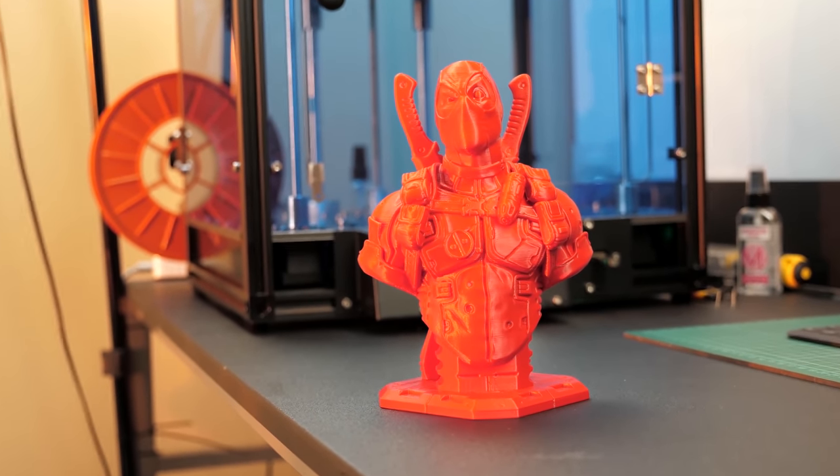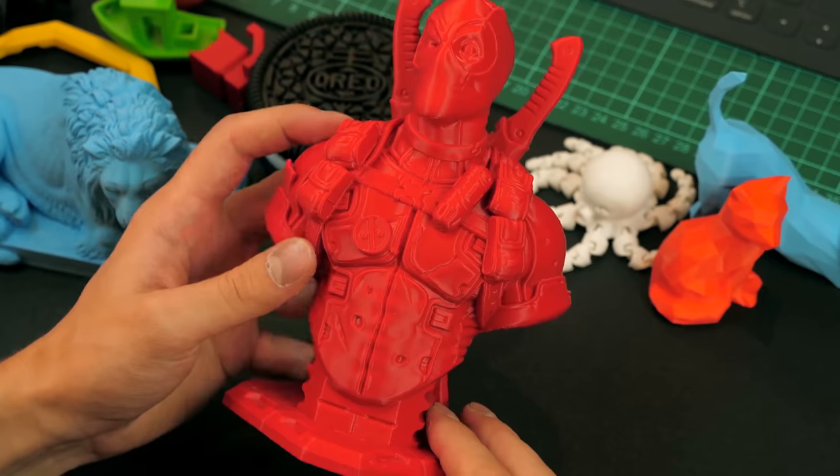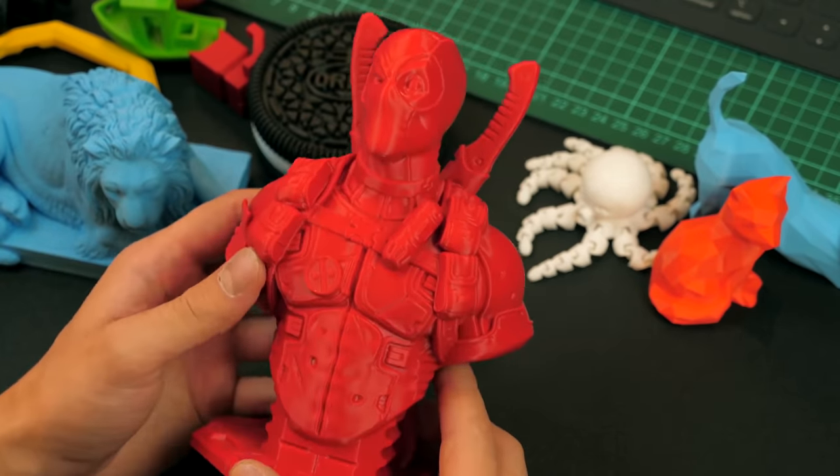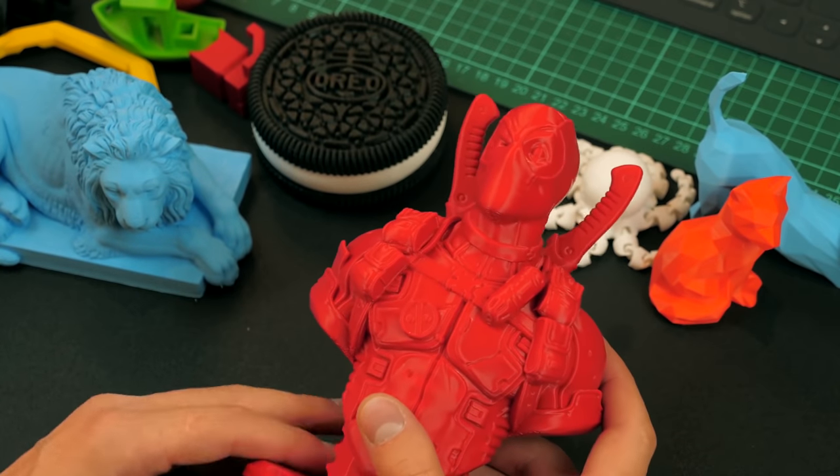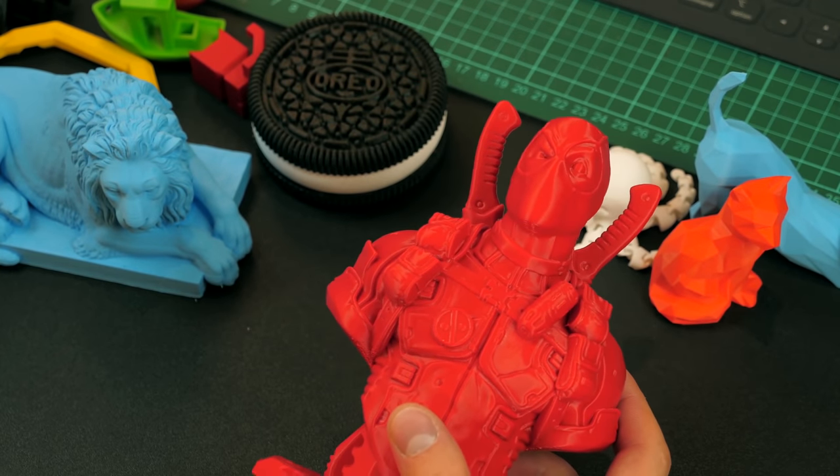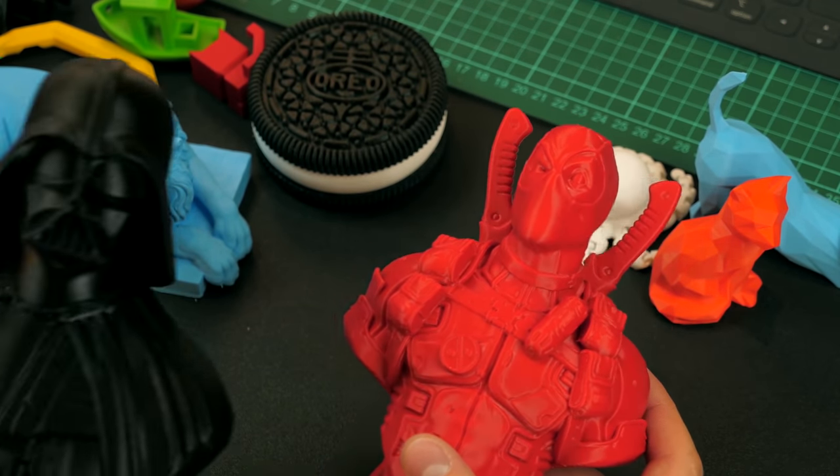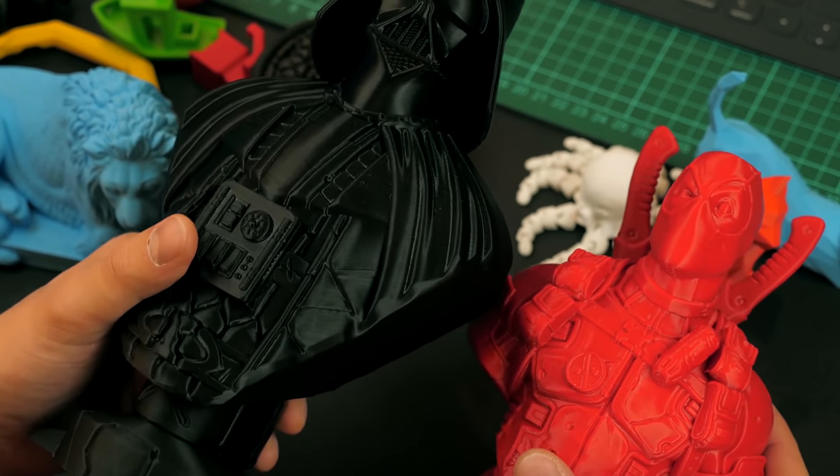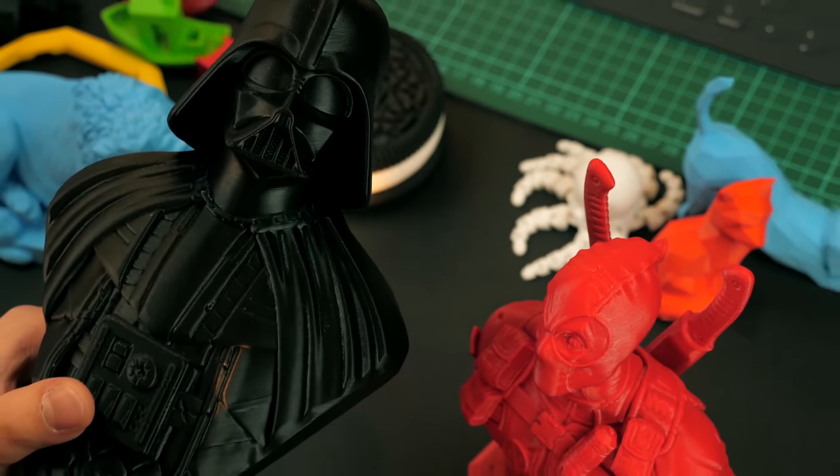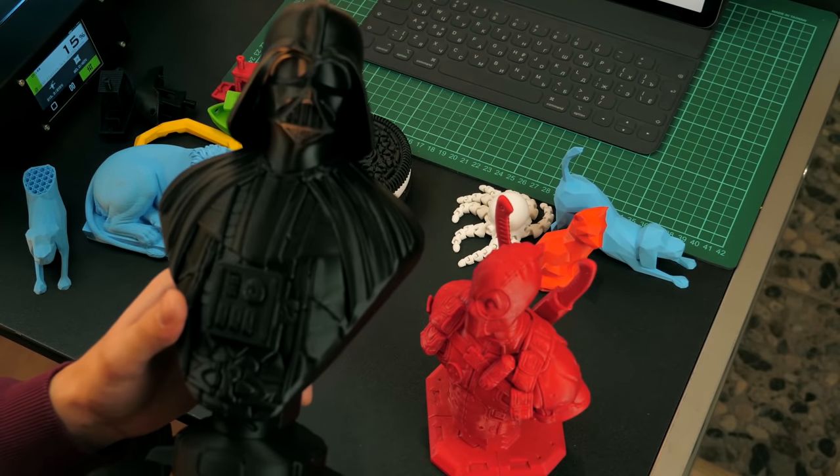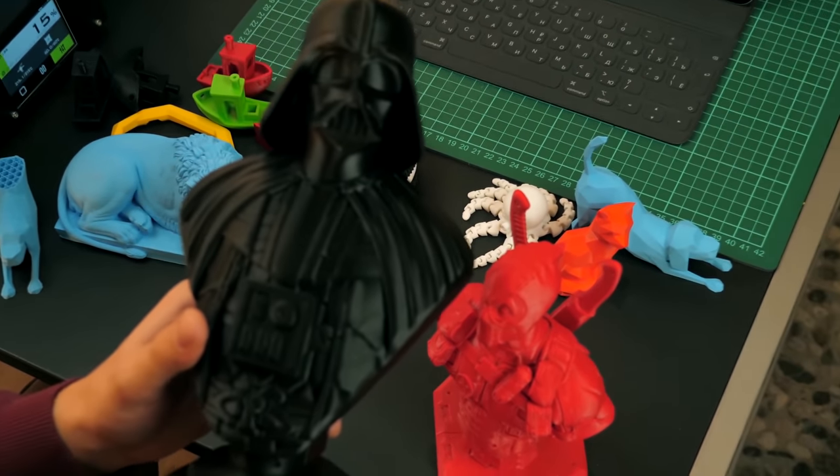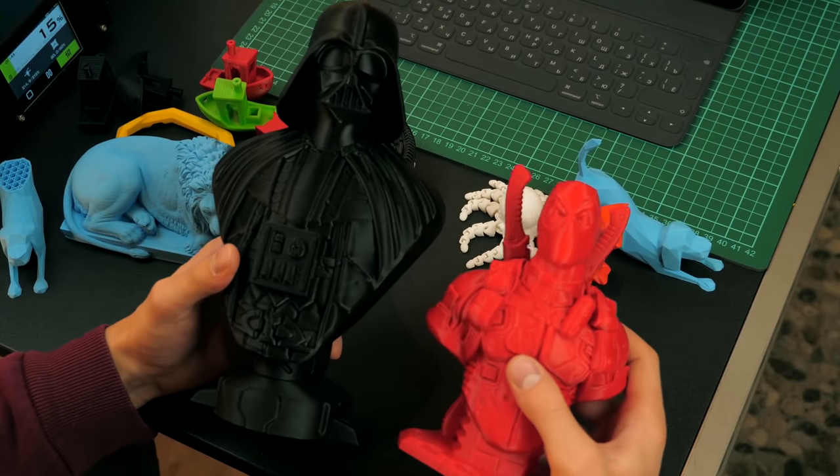While printing a Deadpool, I wanted to check how long and how good a 3D printer can print one model. But I didn't stop there, because I also have a giant Darth Vader here. I will move my camera back, so you can see my Vader well. Because it's really huge. Just look and compare it to the Deadpool.